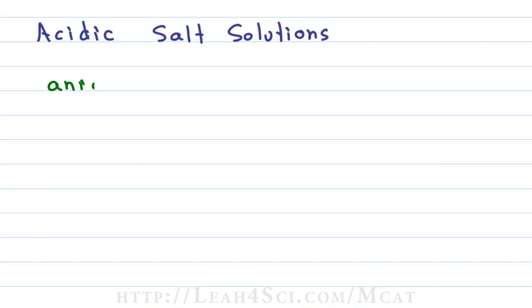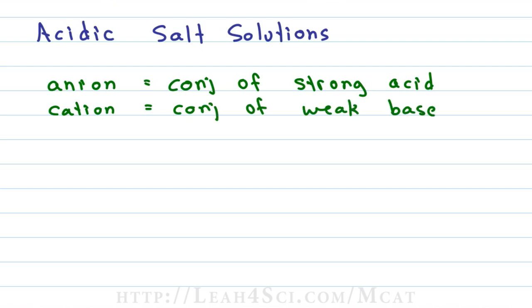When the salt in question has an anion that is the conjugate of a strong acid, it won't impact the solution because strong acids give weak unreactive conjugate bases. Those are negative so they're anions. When the cation is the conjugate of a weak base, we get something positive that is reactive in solution and that will result in an acidic pH.